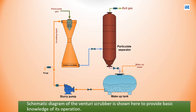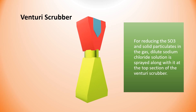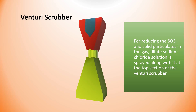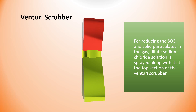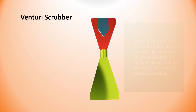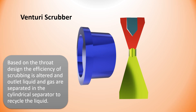A schematic diagram of the venturi scrubber is shown here to provide basic knowledge of its operation for reducing SO3 and solid particulates in the gas. A dilute sodium chloride solution is sprayed along with the gas at the top section of the venturi scrubber. Based on the throat design, the efficiency of scrubbing is altered.